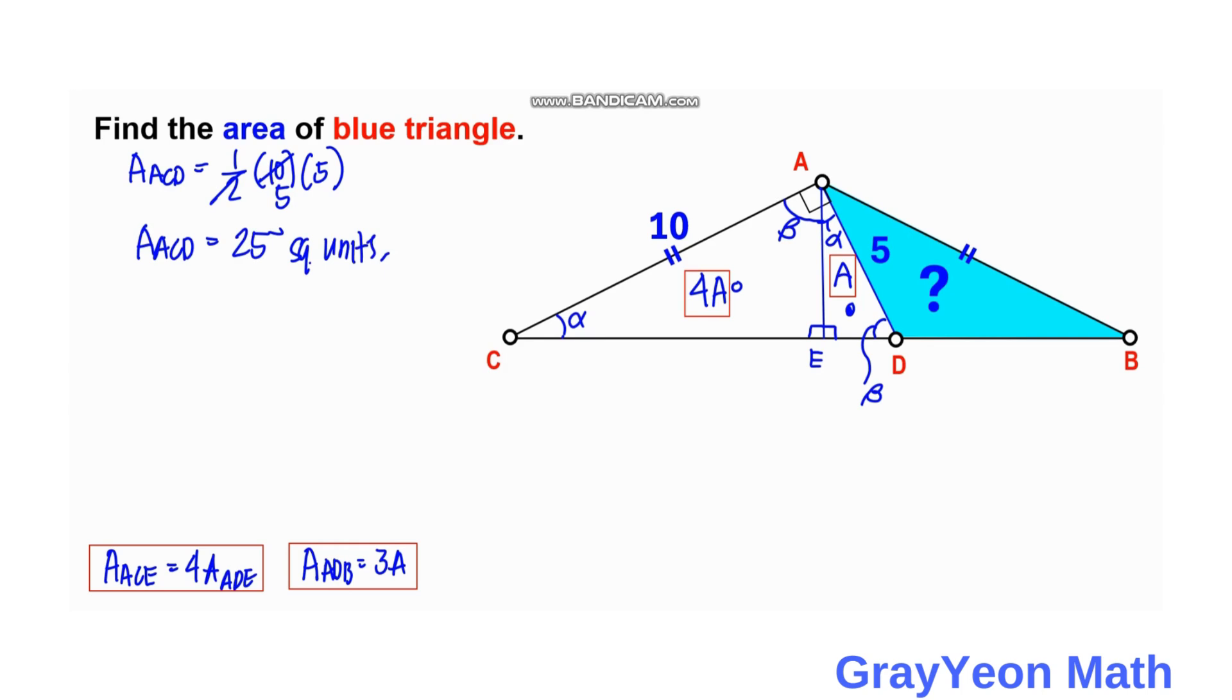But ACD is equal to 5A, so 5A is equal to ACD. So area of ACD, this is actually 25, and therefore 5A equals 25. Divide both sides by 5, so A is 5.